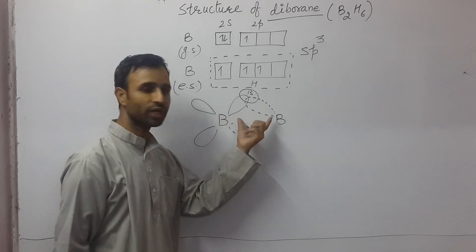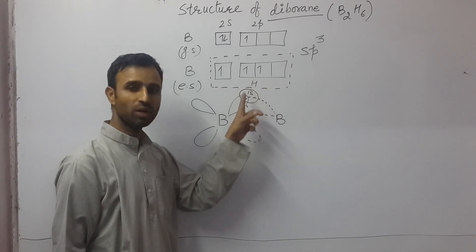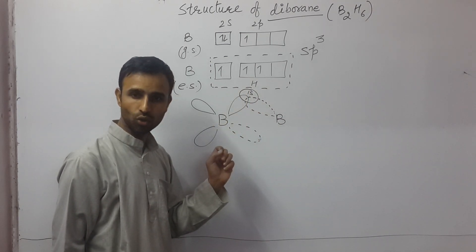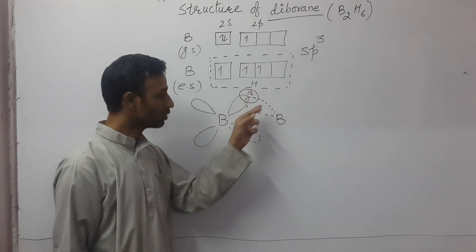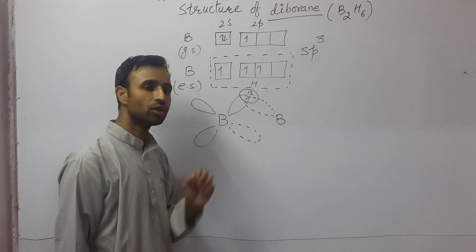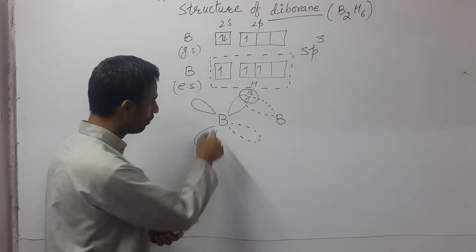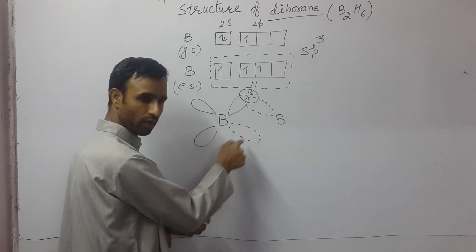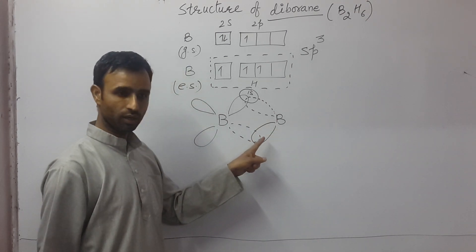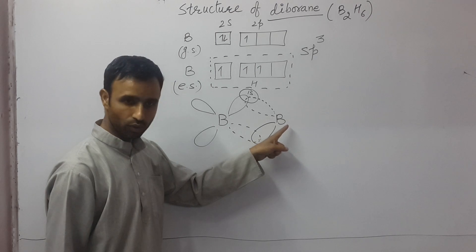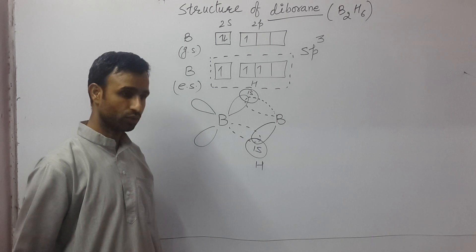That means two borons have one sp3 hybrid orbital which has one electron, other sp3 hybrid orbital which is vacant. They overlap simultaneously with one unpaired electron. And such bond is known as a three-center bond. And how many electrons are involved? Two. One from this boron, one from hydrogen. So this is called a three-center, two-electron bond.